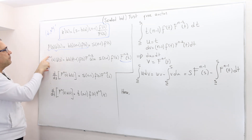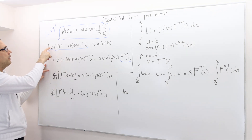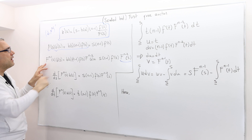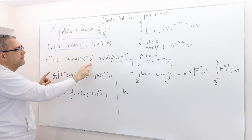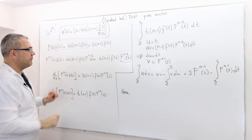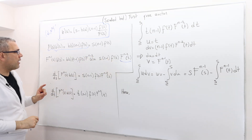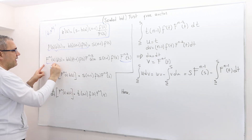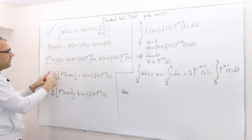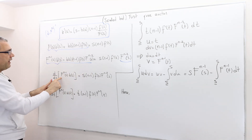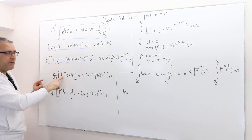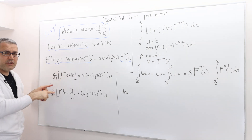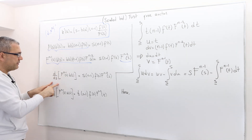Obviously, this becomes F to the power n minus 1 because I already have F here, so I have F to the power n minus 2 here, same here. Then the left-hand side is nothing but the derivative of F to the power n minus 1, times b, with respect to s — the signal.